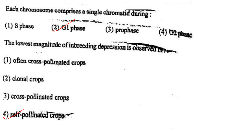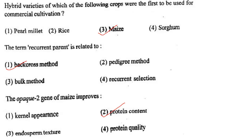Next one: The lowest magnitude of inbreeding depression is observed in option 1, often cross-pollinated crops; option 2, clonal crops; option 3, cross-pollinated crops; option 4, self-pollinated crops. Answer is option 4: self-pollinated crops.